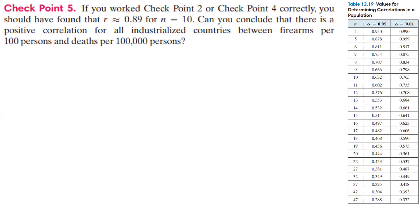If you worked checkpoints two and four correctly, you should have found that r is about 0.89 for a sample size of n equals 10. The question is: can you conclude there is a positive correlation for all industrialized countries between firearms per 100 persons and deaths per 100,000 persons? With r equal to 0.89 and n equal to 10, we look at the corresponding row in the table.